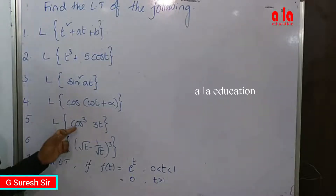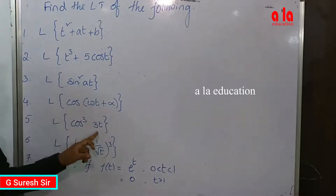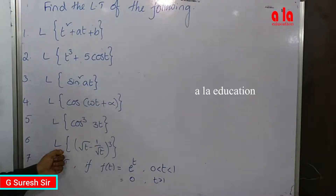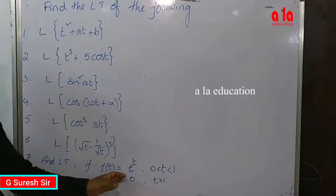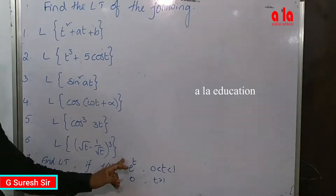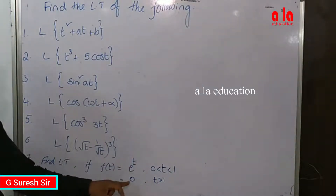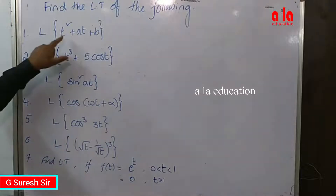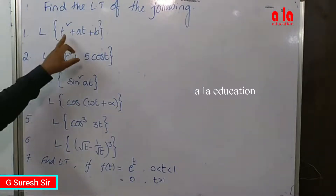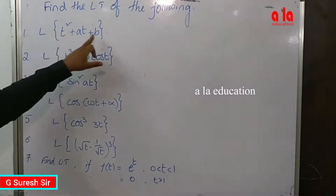Fifth, Laplace transform of cosine cubed 3t. Sixth, Laplace transform of root t minus one over root t, whole cube. Last one, Laplace transform of f(t), which is a split interval function: e to the power t in one interval and zero in another.